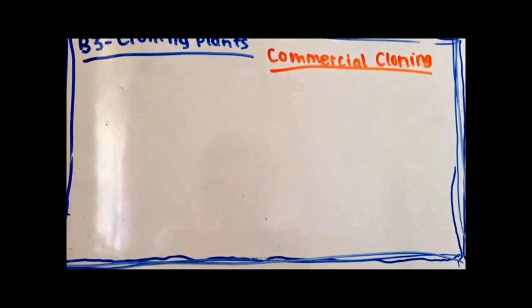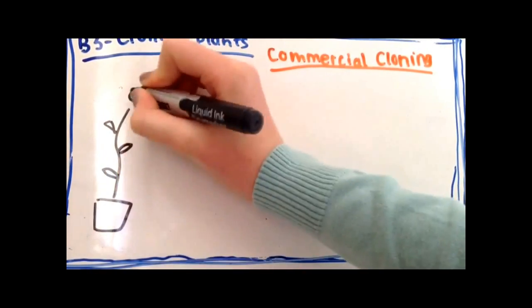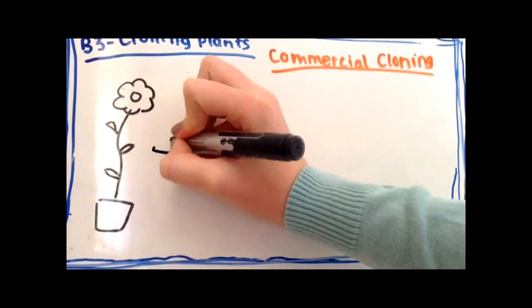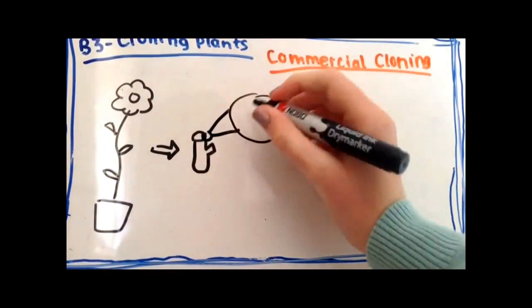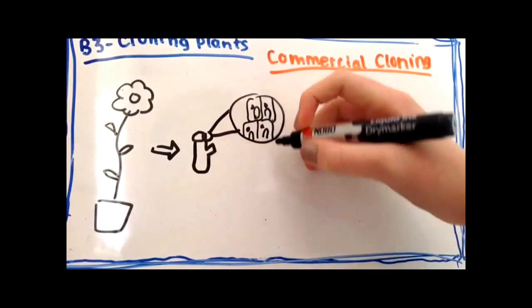Commercial cloning often involves tissue culture. To commercially clone a plant, you first choose a plant based on its characteristics, for example a beautiful flower or good fruit crop. Then you remove several small pieces of tissue from the parent plant.